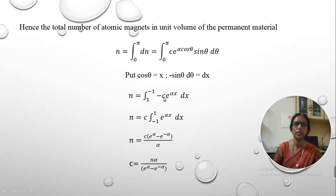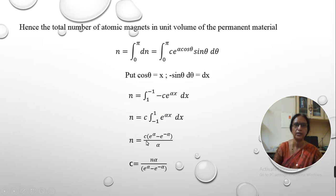The negative sign is eliminated by changing the limits to -1 to 1. The integration of e^(αx) dx gives e^(αx) / alpha. Applying the upper and lower limits, we get the expression for N. Cross-multiplying, C equals N·alpha divided by (e^alpha - e^(-alpha)).